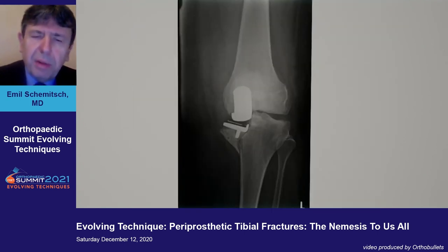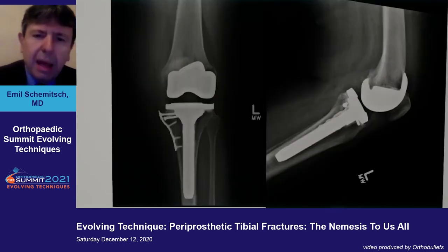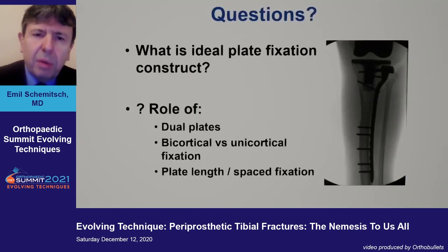This is a patient with a unicondylar fracture, which is not uncommon for tibial periprosthetic fractures. This patient has a loose implant that was revised to a stemmed tibial component. If you're going to use fixation, you need to use a plate to support fractures of the plateau.